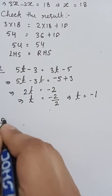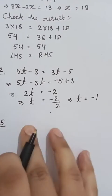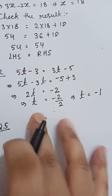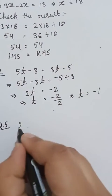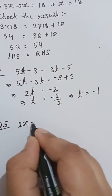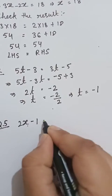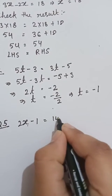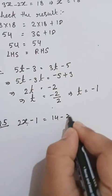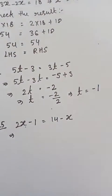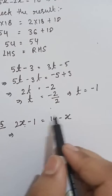Question number 5: 2x minus 1 equal to 14 minus x. Solve for x.